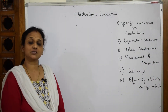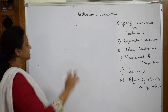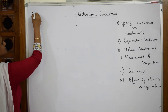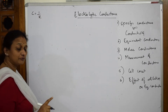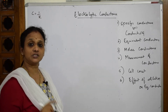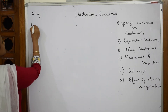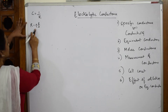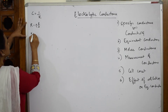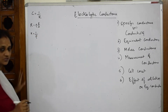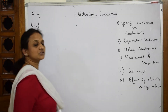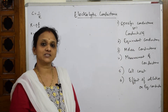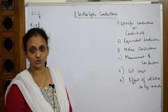Let's review what we have learned so far. The formula for conductance is C = 1/R. The formula for specific resistance is R = ρl/A. Specific conductance is written as κ = 1/ρ. Specific conductance is also called conductivity — both terms are similar. We will also see how conductivity varies with dilution.